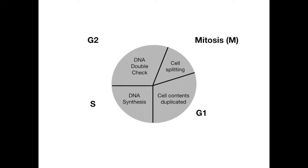I want to move through this video by talking about drugs that affect each of these categories one at a time, and at the end we'll talk about drugs that don't really fit into any of these four phases. Let's get started with the anti-cancer drugs that act on mitosis — the M phase. Those four drugs are vincristine, vinblastine, paclitaxel, and eribulin.